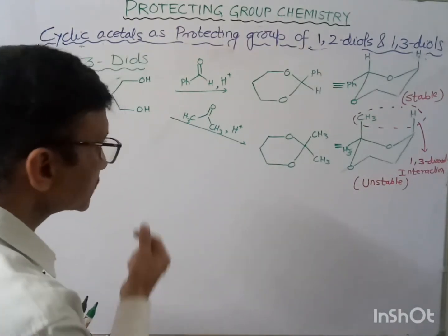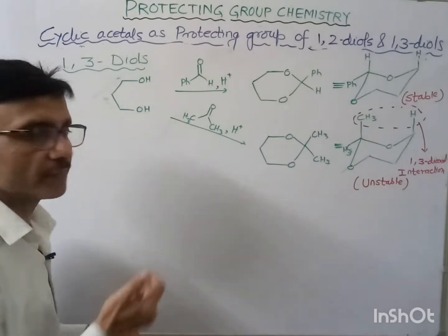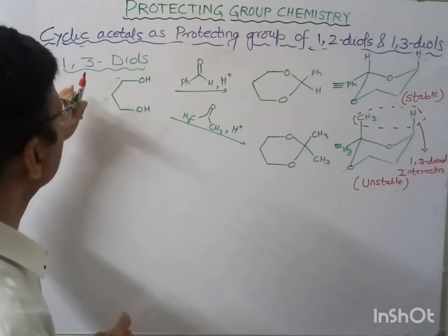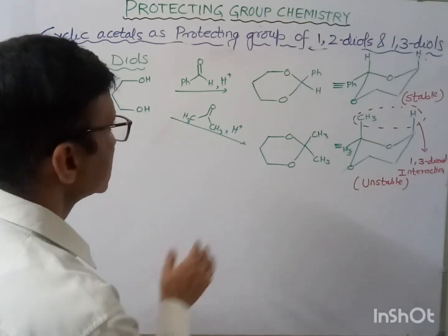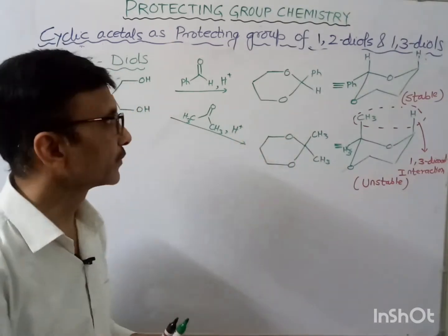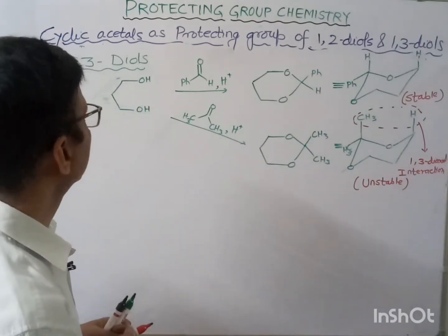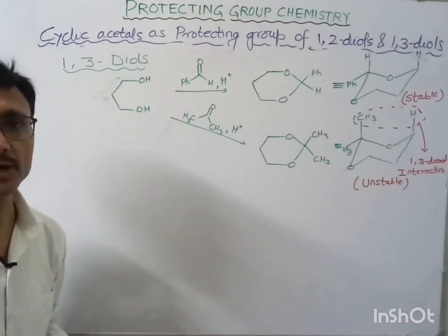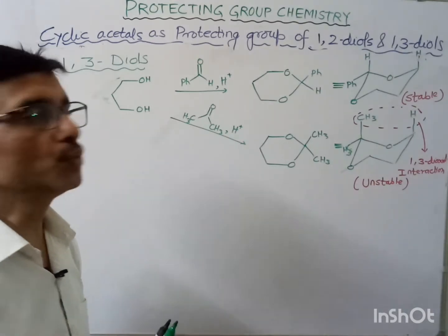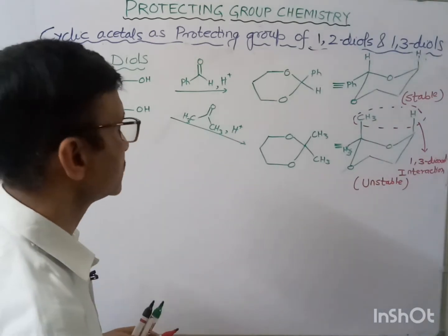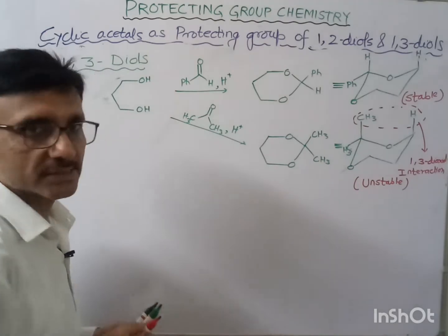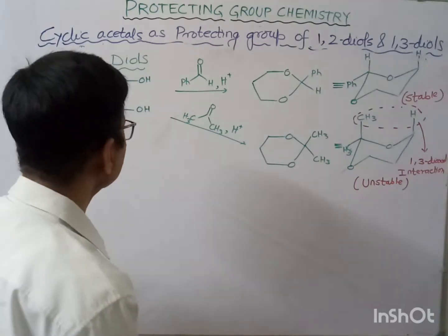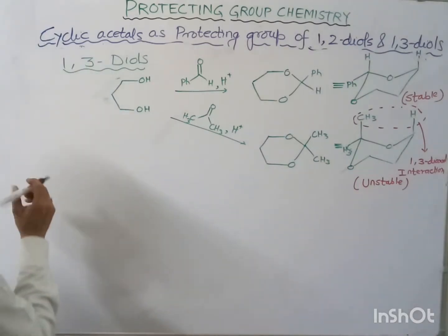So to summarize: with a 1,3-diol we get a six-membered cyclic acetal, and with a 1,2-diol we were getting a five-membered cyclic acetal. Now let's look at one example.